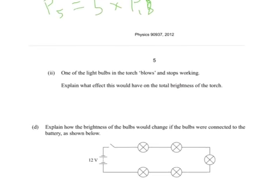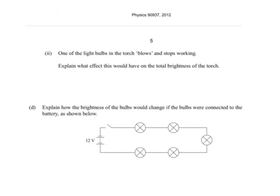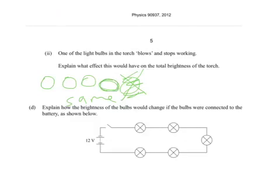Part 2: One of the light bulbs in the torch blows and stops working. Explain what effect this would have on the total brightness of the torch. If you've got 5 bulbs all at the same brightness and one of them blows, because they're in parallel, the brightness will not change for any of those. They still have 12 volts across them and they will draw that current, so the brightness should not change for each of the individual bulbs. But you would have 4 out of 5 bulbs working, so you'd have 1/5th less brightness.